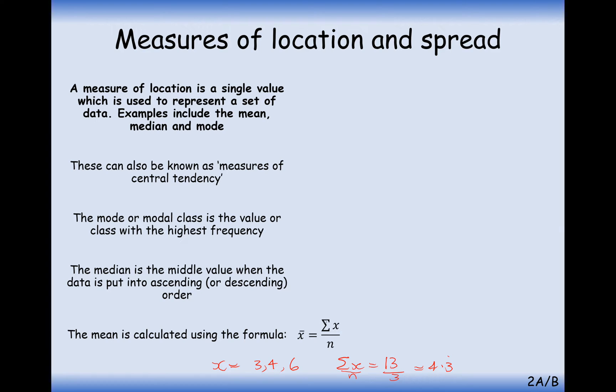Okay, so just a little bit of new notation here. When you see sigma x, it means add up all of the values. And when it's n, n is referring to how many pieces of data you have. The x bar here is another way of us writing the mean. Okay, so get used to that notation there.